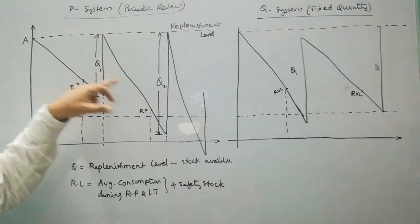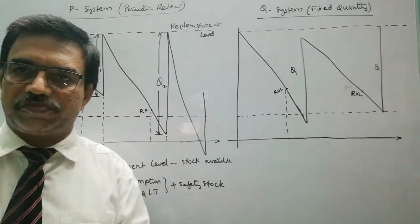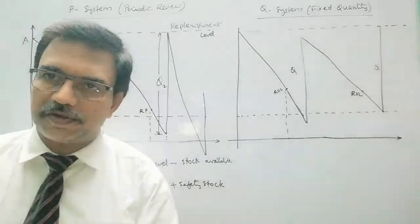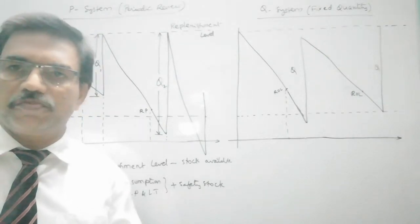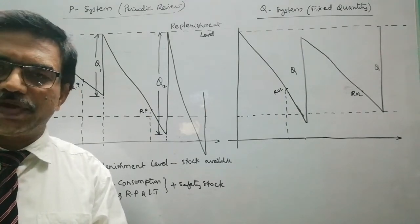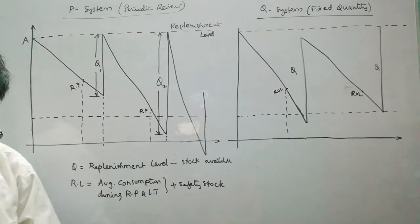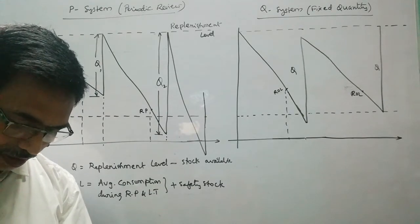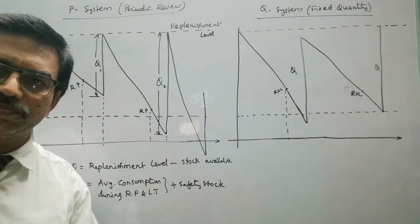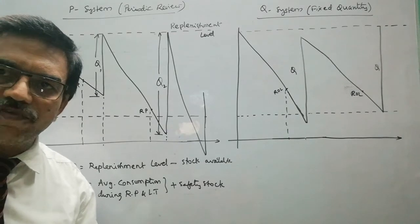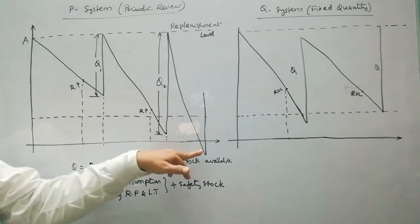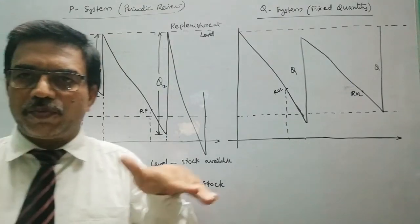This system is suitable only when the carrying cost is very small, that is insignificant. Since the quantities vary, sometimes we may have to carry large quantities of inventory. There is an advantage though: if the required quantity is large we can go for bulk purchases and take advantage of bulk discounts. Coming to the disadvantages, we have to audit each and every item periodically, so the cost of operating the inventory control system will be high in P system. To avoid stock-outs we may have to maintain larger amounts of safety stock.